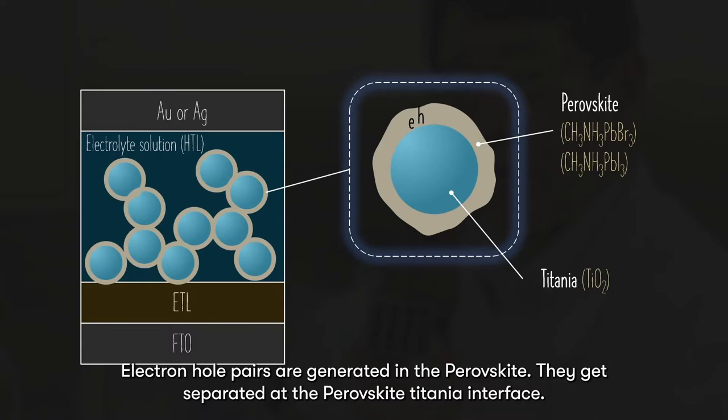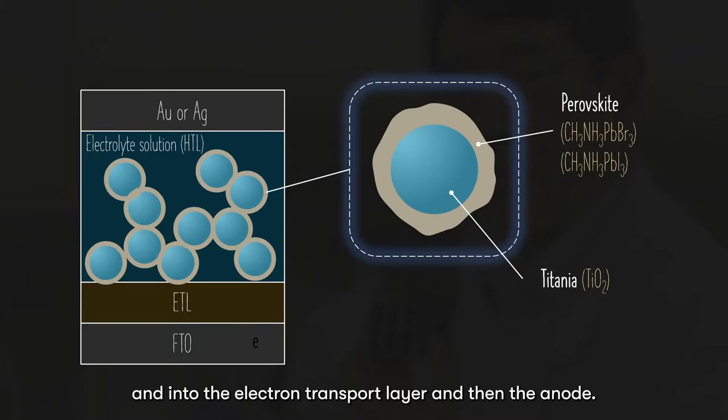Electron hole pairs are generated in the perovskite. They get separated at the perovskite-titania interface. Electrons travel through the titania and into the electron transport layer and then the anode. Holes travel through a liquid electrolyte hole transport layer into the cathode. This solar cell yielded an efficiency of 3.8%.